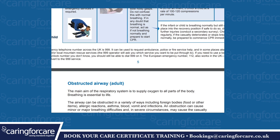Helpful hint: The free emergency telephone number across the UK is 999. It can be used to request the ambulance, police or fire service, and in some places also the coastguard and/or local mountain rescue services. The 999 operator will ask what service you want to be put through. If you need to use a locked mobile phone whose unlock number you do not know, you should still be able to dial 999 on it. The European emergency number 112 also works in the UK; calls to it will automatically divert to the 999 service.